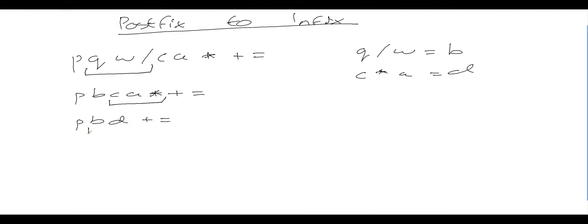Then I do exactly the same thing and I can see here that I've got b, d plus. And then I'm going to put another aside and say b plus d is equal to e. Then all I'm left with is p, e equals.